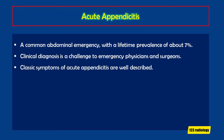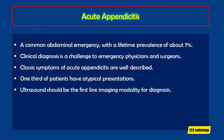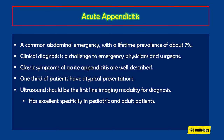Classic symptoms of acute appendicitis are well described. However, up to one-third of patients with acute appendicitis have atypical presentations. Ultrasound should be the first-line imaging modality for diagnosis of acute appendicitis, as it has excellent specificity, both in the pediatric and adult patients.